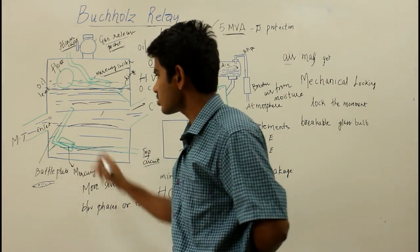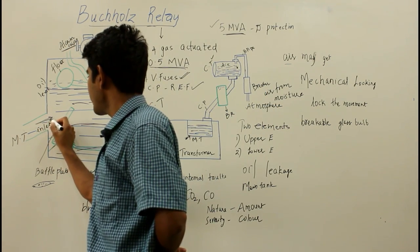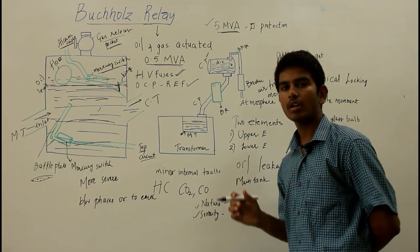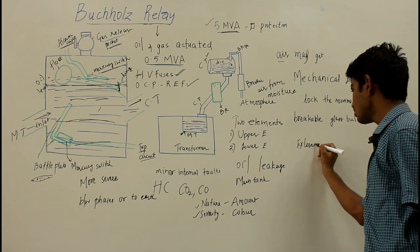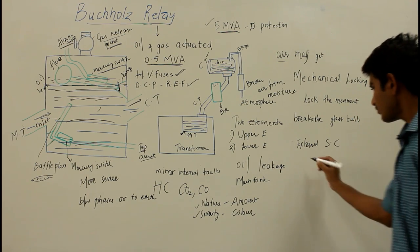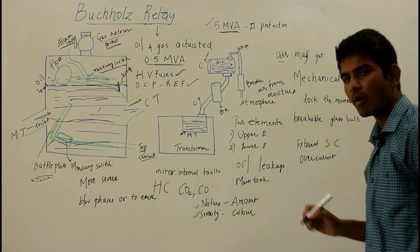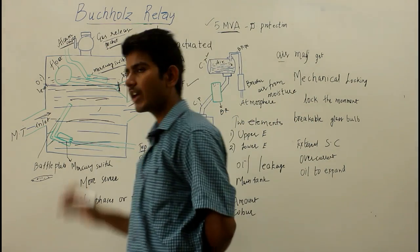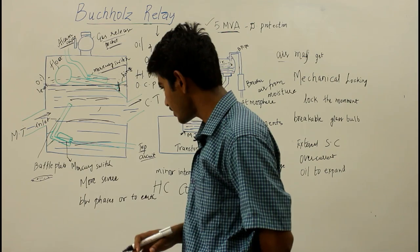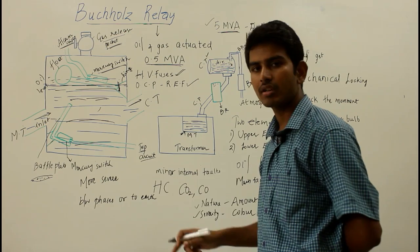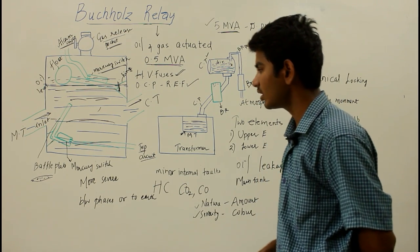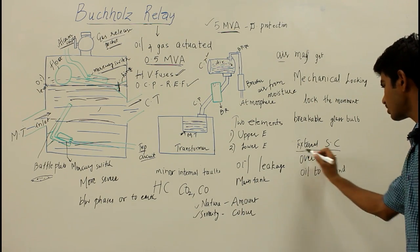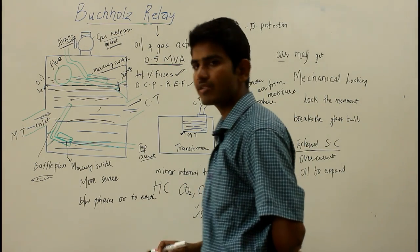The lower element may also falsely operate when there is high oil velocity striking the baffle plate even though no severe fault is occurring in the transformer. This may happen in the event of an external short circuit, where overcurrent causes overheating in the copper and oil expansion. If the expanding oil strikes the baffle plate with high velocity, it changes the mercury switch alignment, closes contacts, energizes the trip circuit, and isolates the transformer — causing a false Buchholz operation.